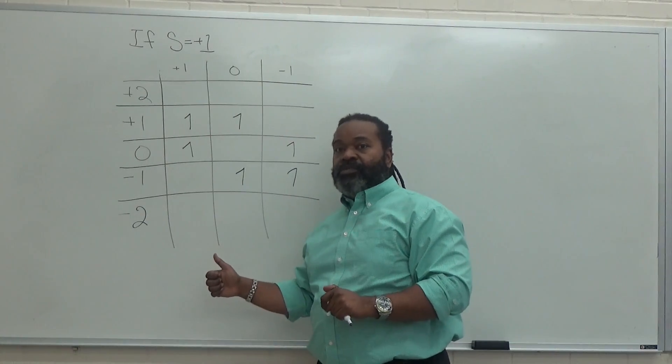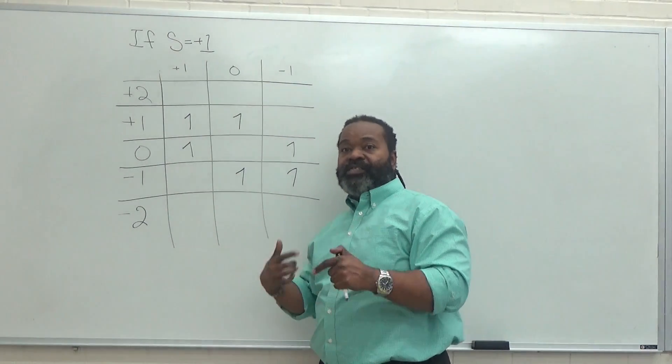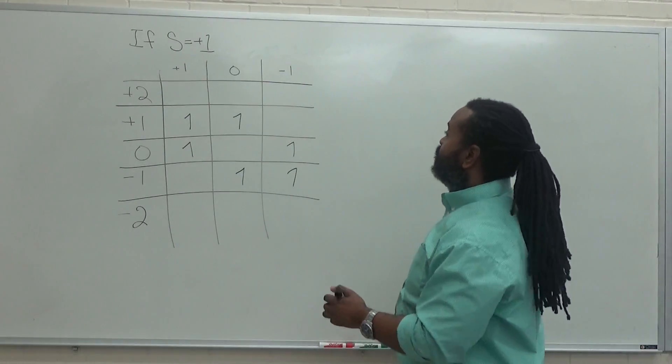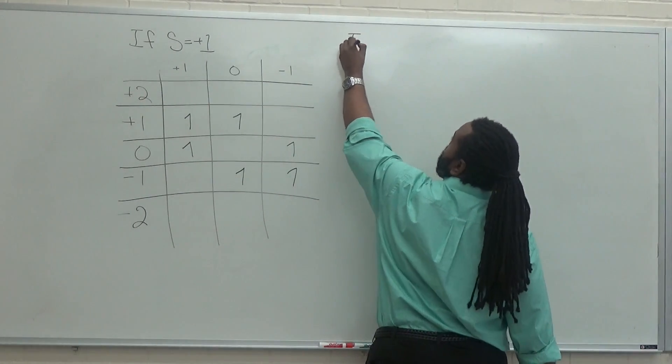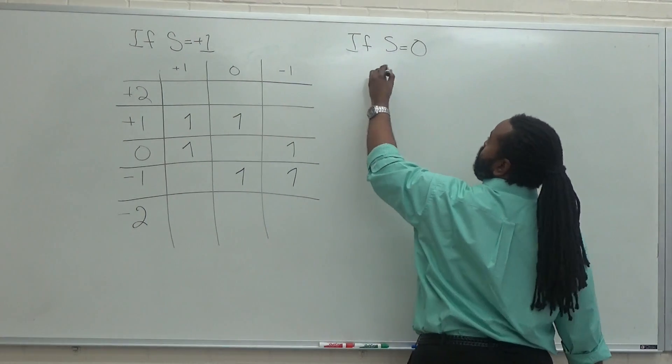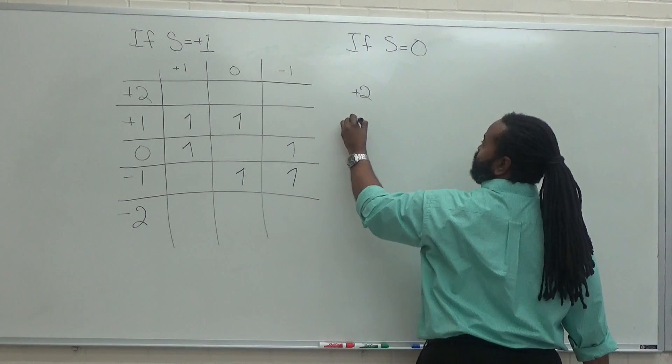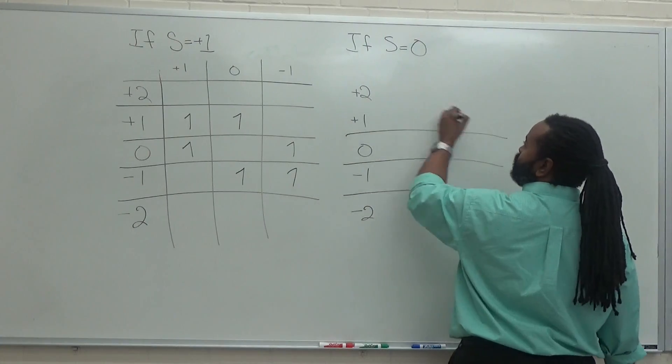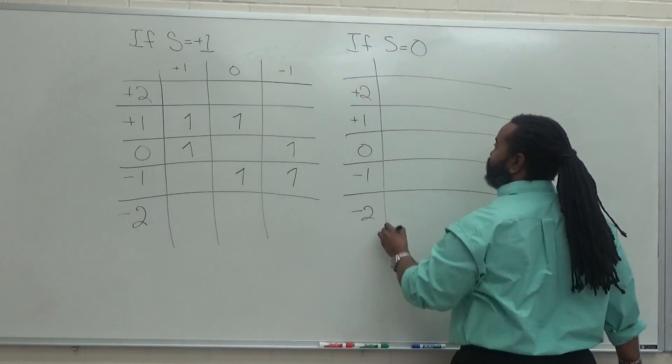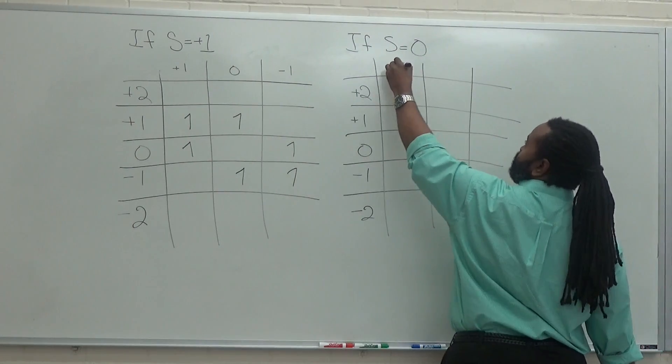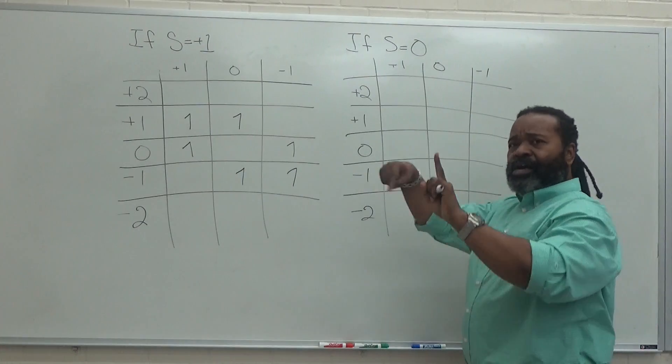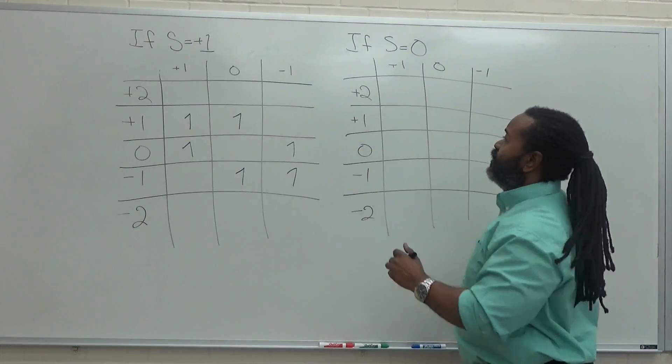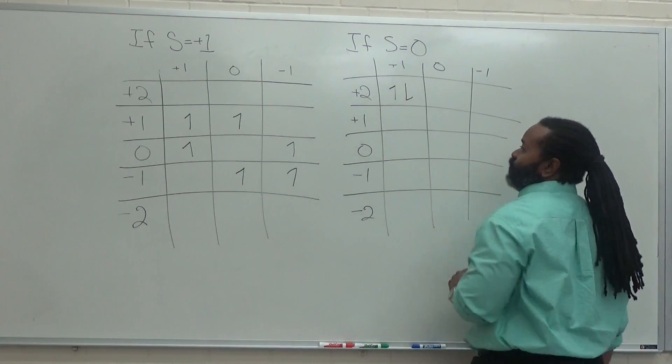It's straightforward to note that while we would need to write a third chart for S equals minus one, it's going to be identical to this one except that all of these are spinning down. So the next one we want to draw is if S equals zero. In this case we will have the same set up. But now, because S equals zero means that the electrons are opposite spin, it's possible to put them both in the plus one sub orbit and get a plus two. So this is a configuration here.